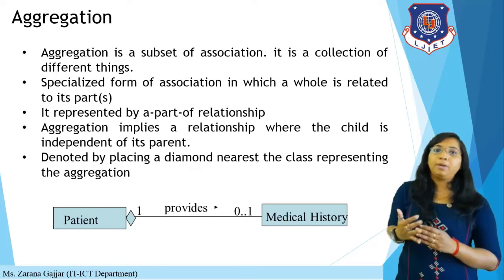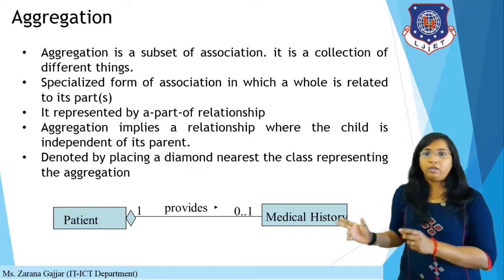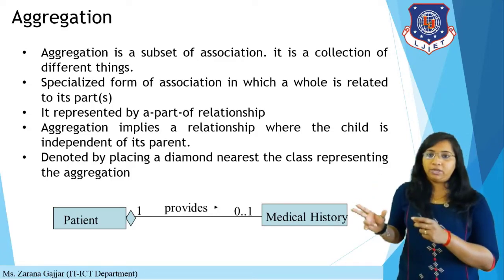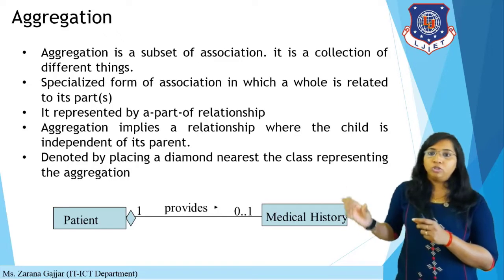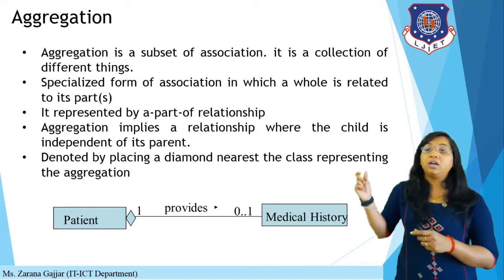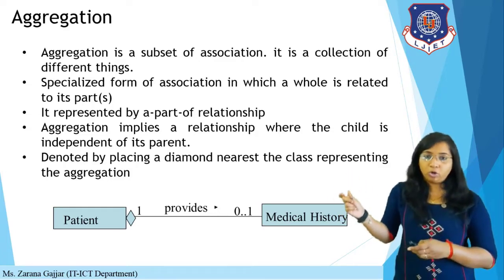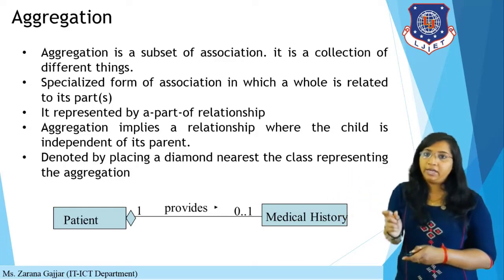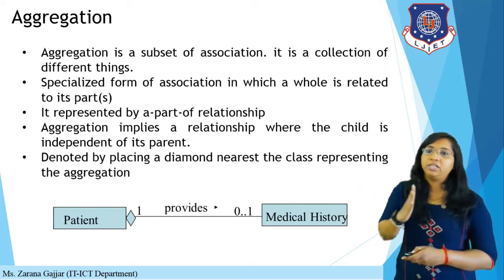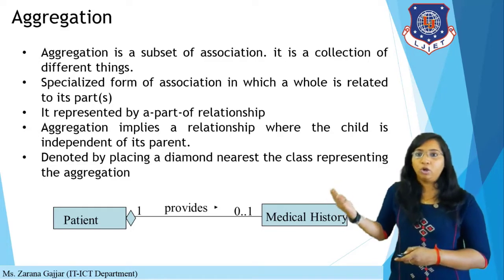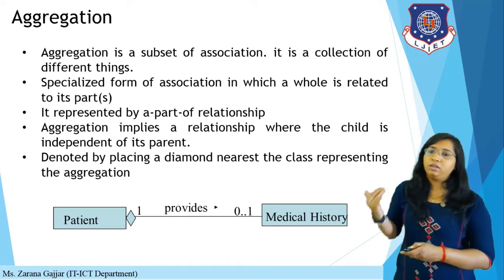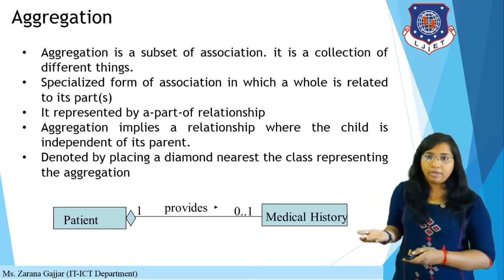In the example, a patient provides medical history. The diamond symbol is drawn near the patient object, indicating aggregation. Medical history is a part of a patient — patient has some medical history. This 'part-of' relationship is defined using aggregation.